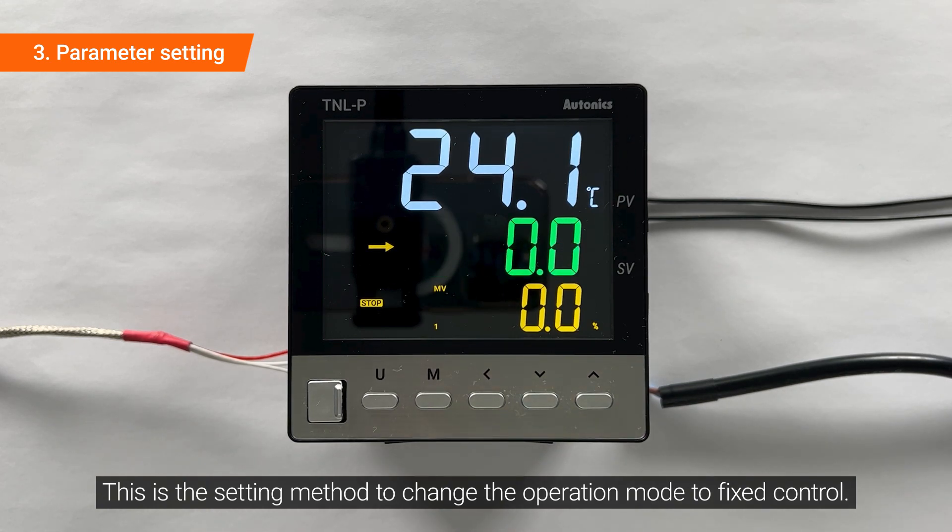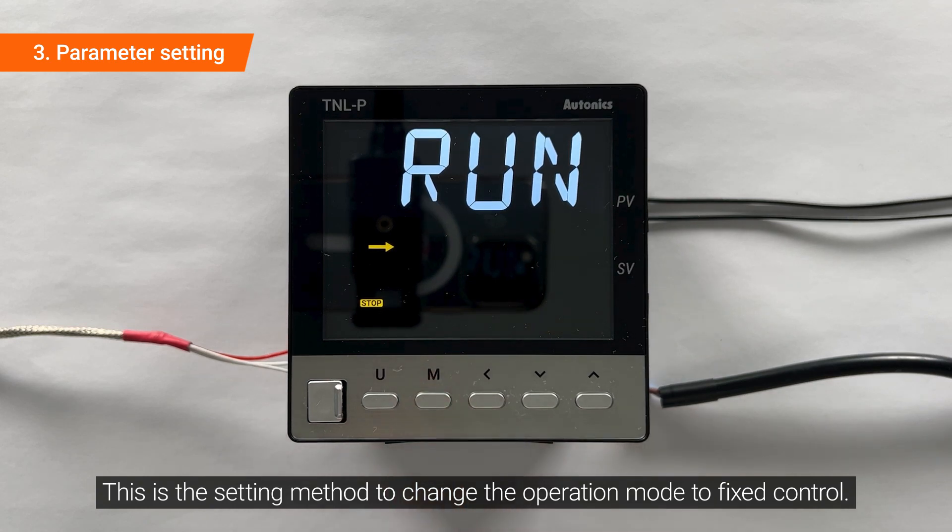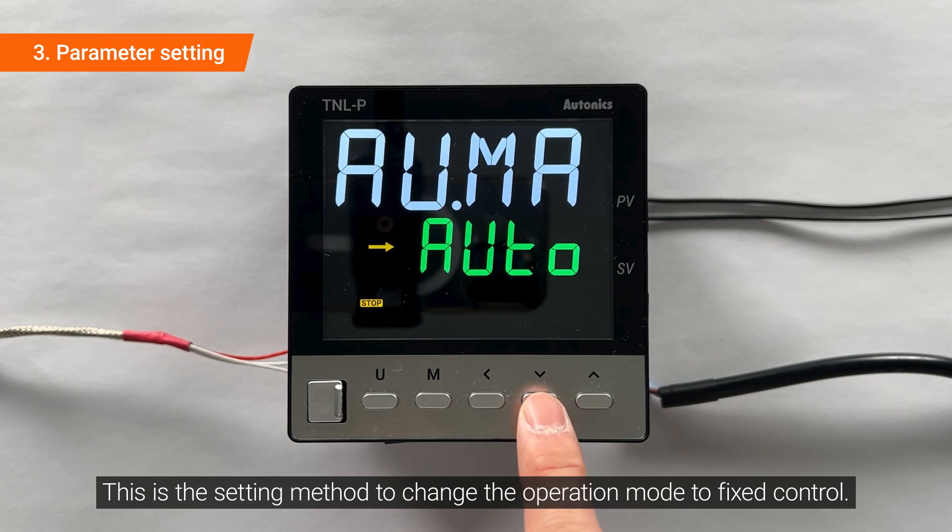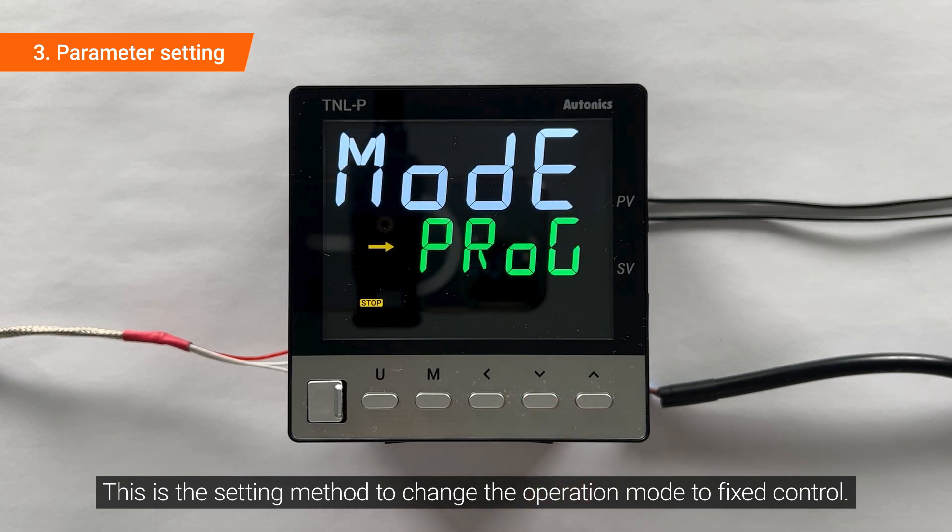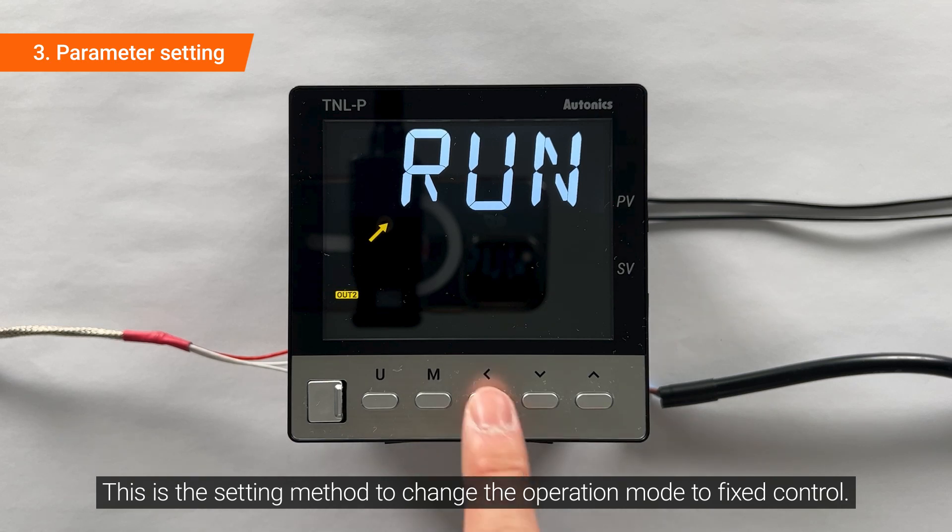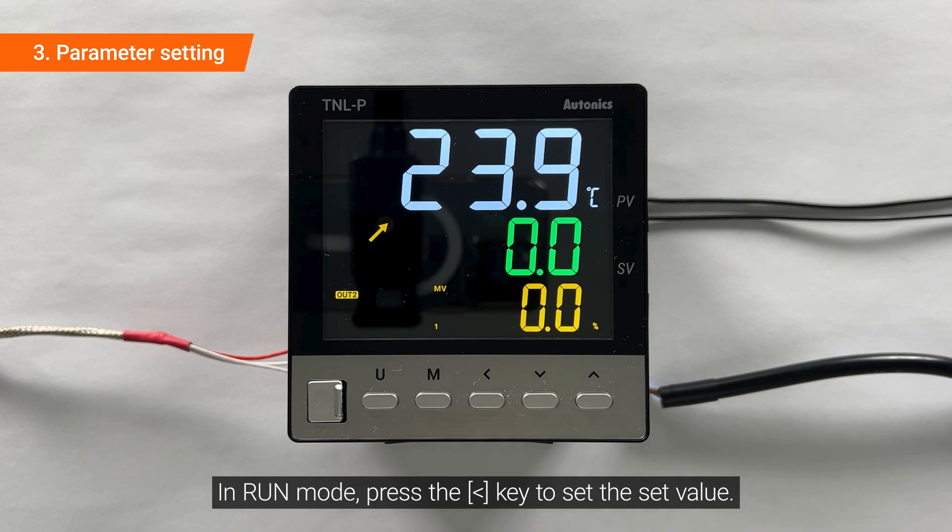This is the setting method to change the operation mode to fixed control. In run mode, press the left key to set the set value.